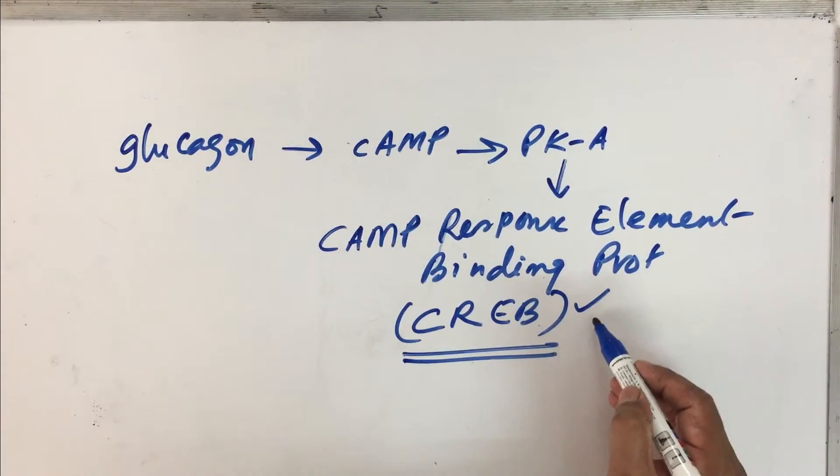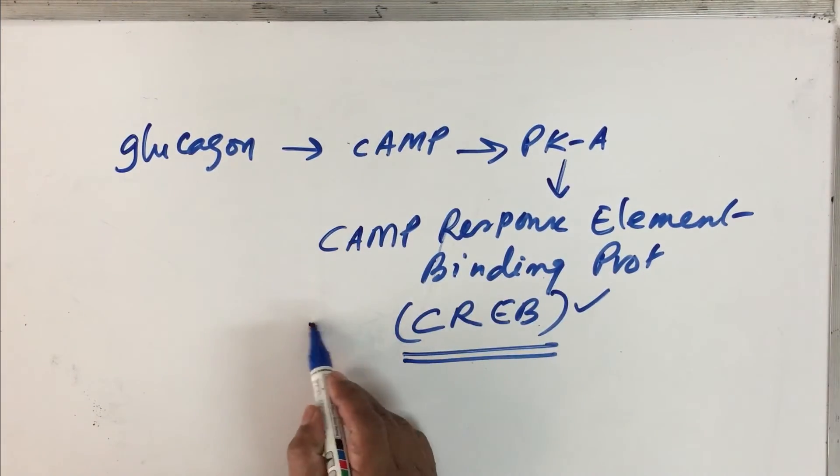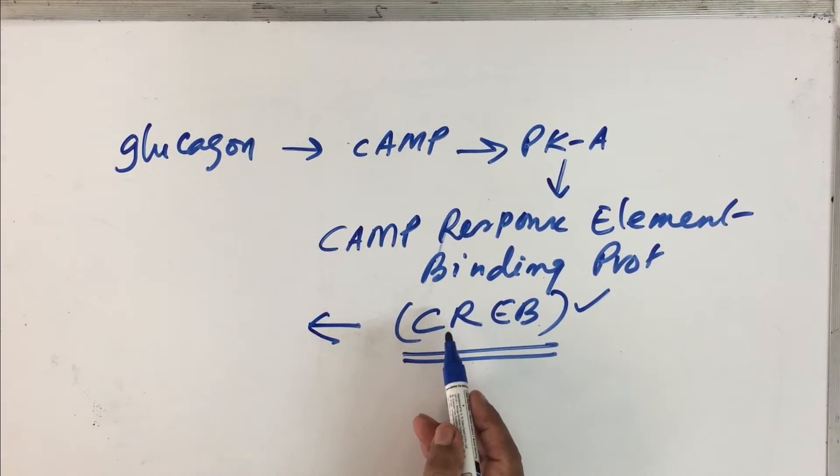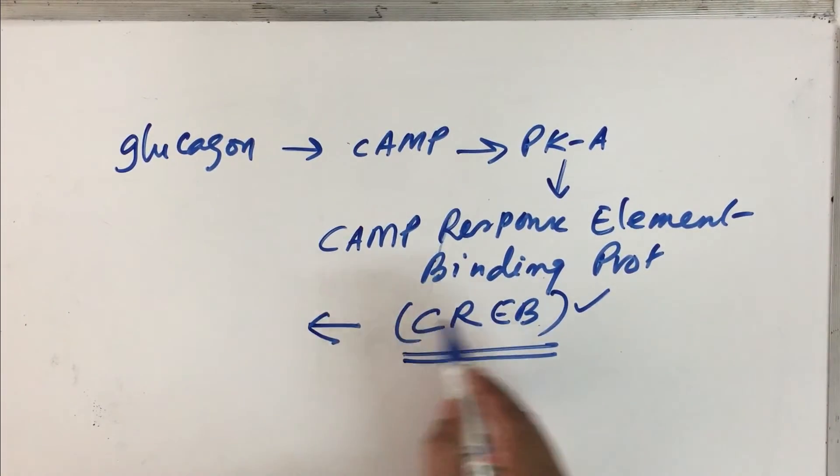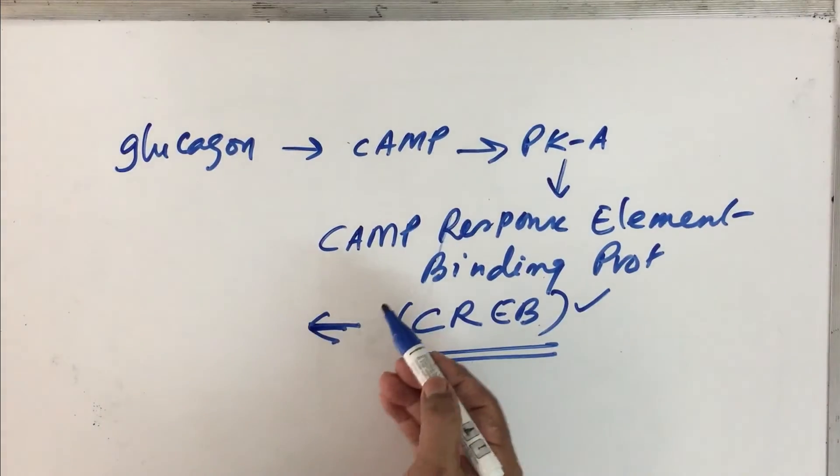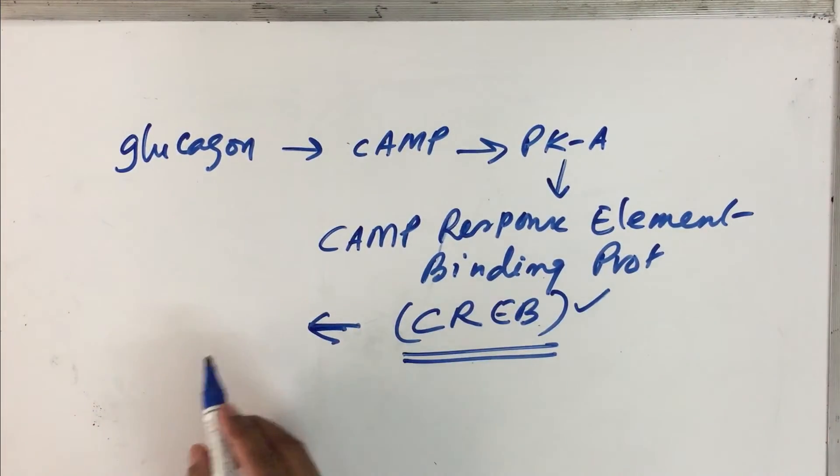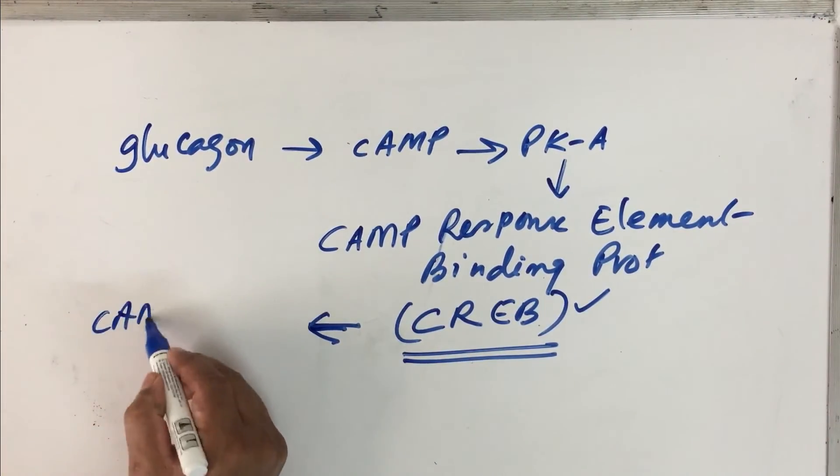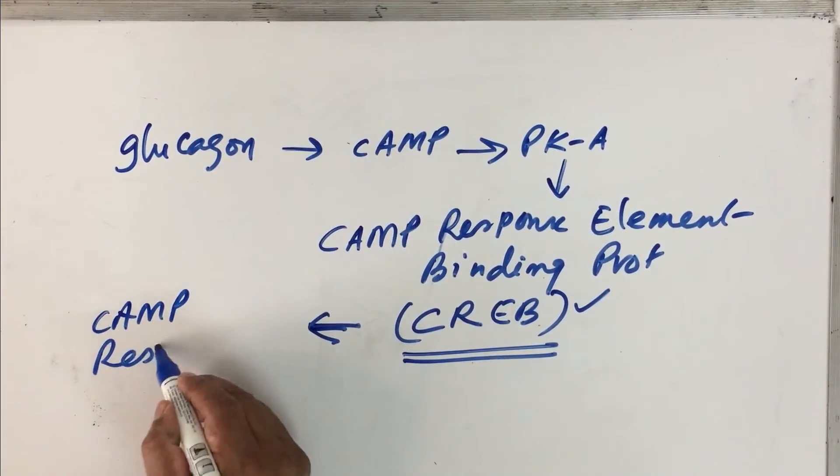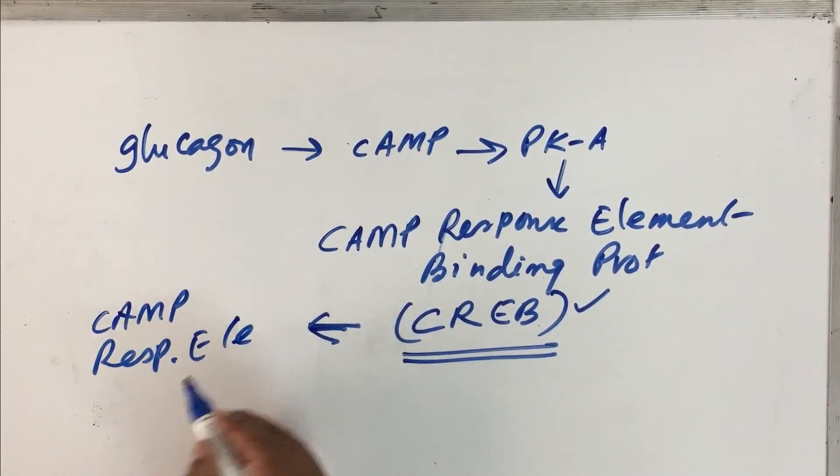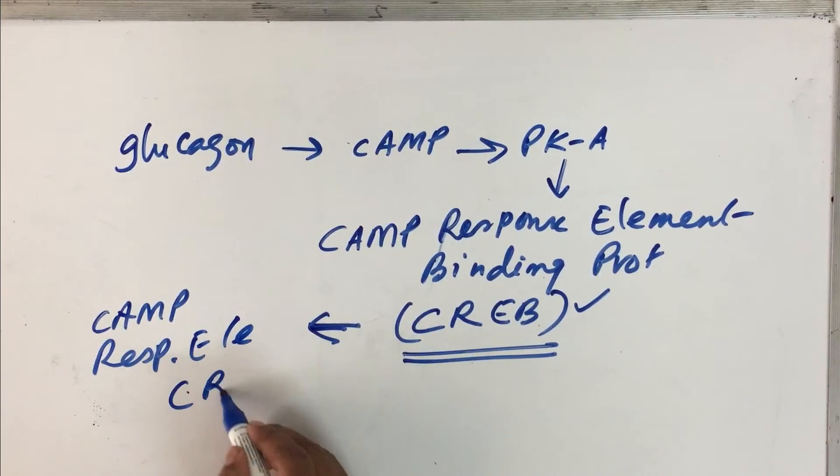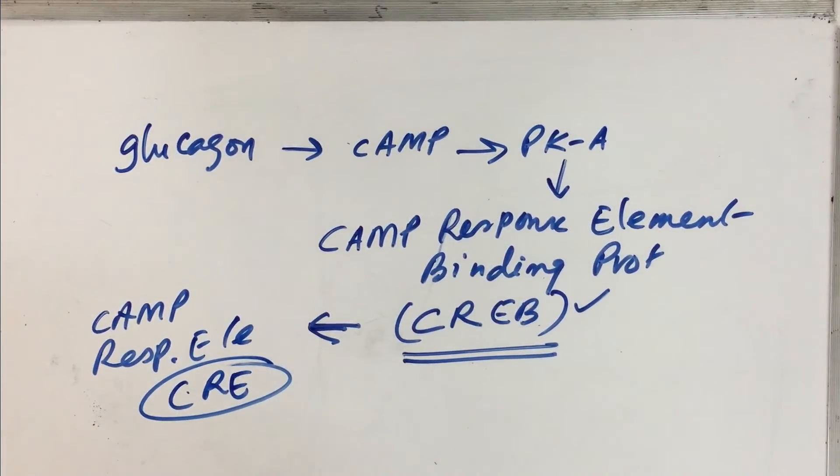The short form is CREB, cAMP response element binding protein. It will phosphorylate and this protein becomes active now. Once this protein, because this is a transcription factor, once this protein is active, now this will be in the nucleus. This protein will bind to cAMP response element. Once it binds to cAMP response element on the gene, it will increase the transcription.